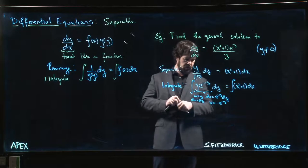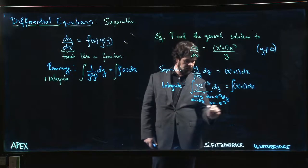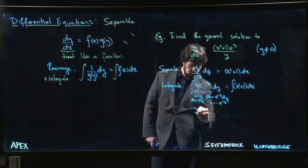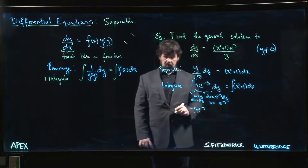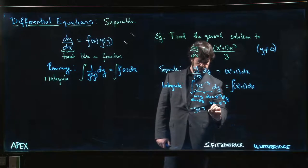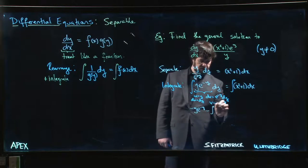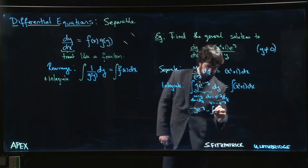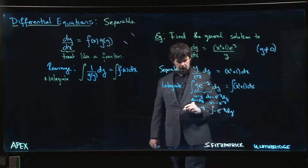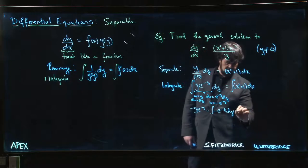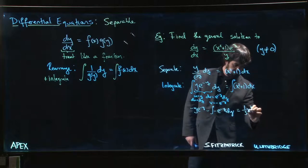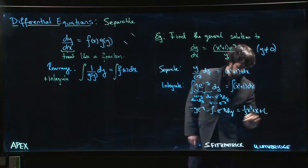We're going to get uv, so we get minus y e to the minus y, minus the integral of v du, so minus the integral of minus e to the minus y dy. On the other side we can just integrate: one third x cubed plus x plus c.